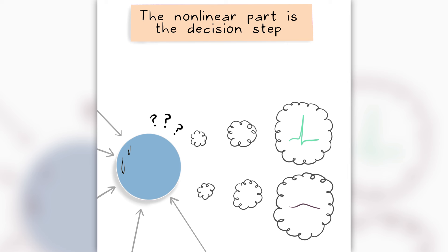The non-linear part is the decision step. Based on the number from the linear step, the node decides: blip or no blip.